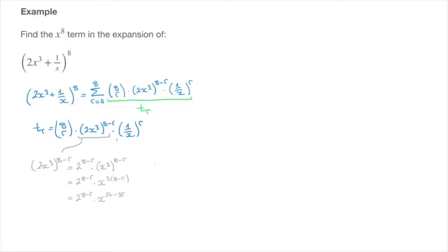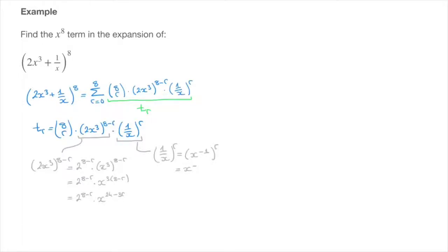We now move on to the last term: 1 over x raised to the power of r. We can rewrite that fraction as x to the power of negative 1, raised to the power of r. That power of r multiplies the power of negative 1, so this last term equals x to the power of negative r.